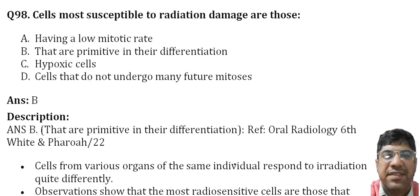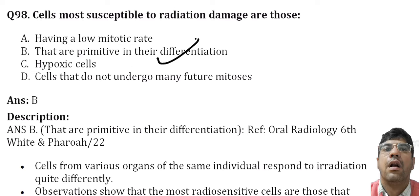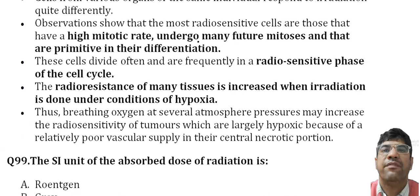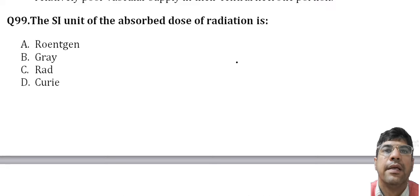Cells that are most susceptible to radiation damage are those that are primitive in their differentiation. The SI unit for absorbed dose is the gray.